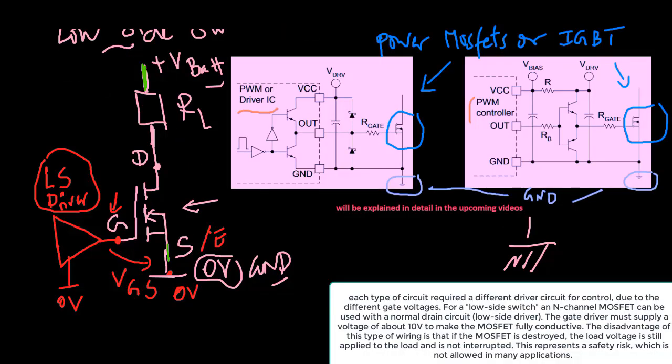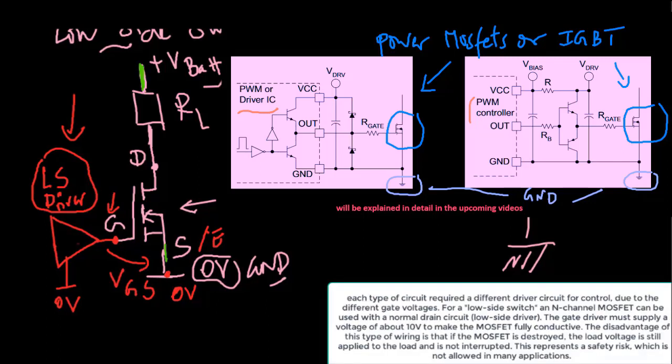Each type of circuit requires a different driver circuit for control due to the different gate voltages. For low-side switch, an N-channel MOSFET can be used with a normal drain circuit. The gate driver must supply a voltage of about 10 volts to make the MOSFET fully conductive. The disadvantage of this type of wiring is that if the MOSFET is destroyed, the load voltage is still applied to the load and is not interrupted. This represents a safety risk which is not allowed in many applications.